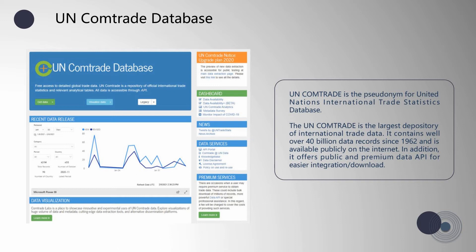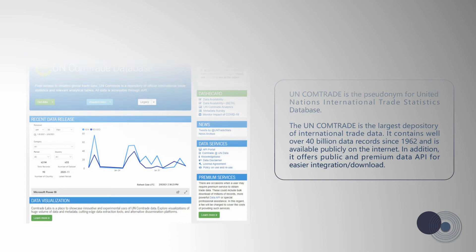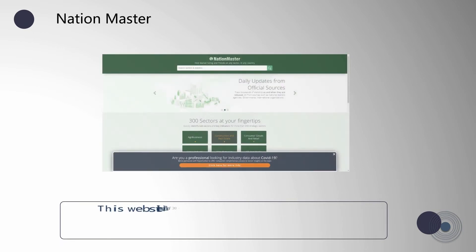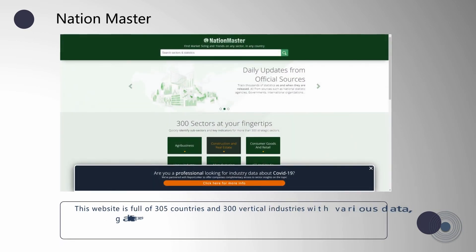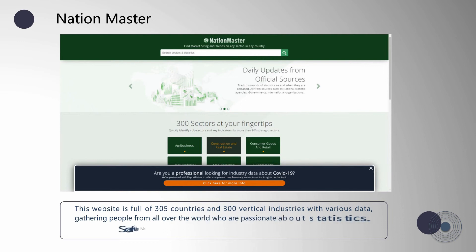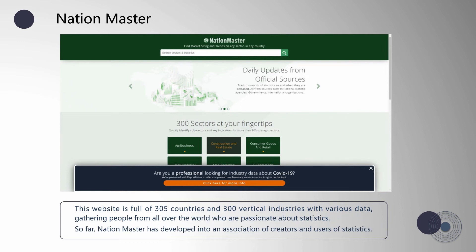In addition, it offers public and premium data APIs for easier integration and download. Nation Master covers 305 countries and 300 vertical industries, gathering data from people all over the world who are passionate about statistics. So far, Nation Master has developed into an association of creators and users of statistics.